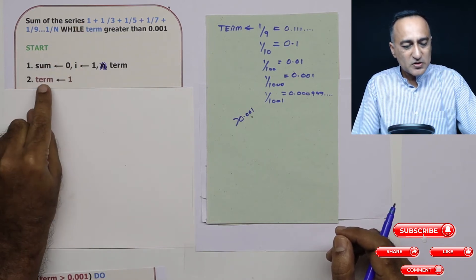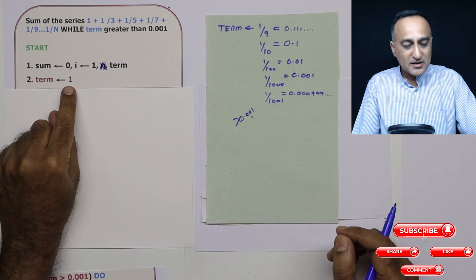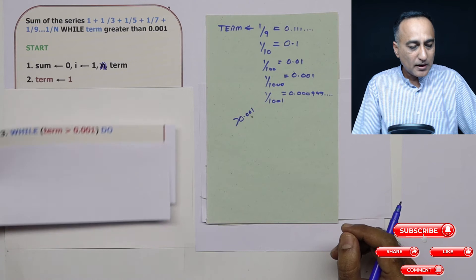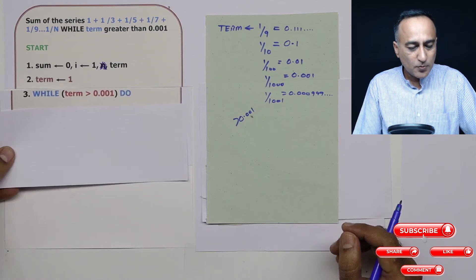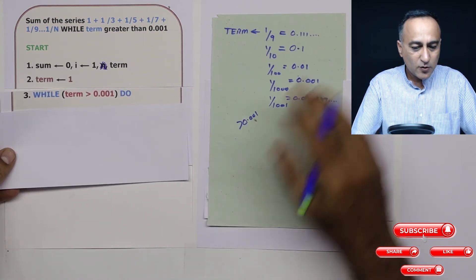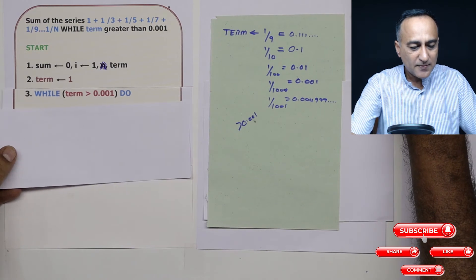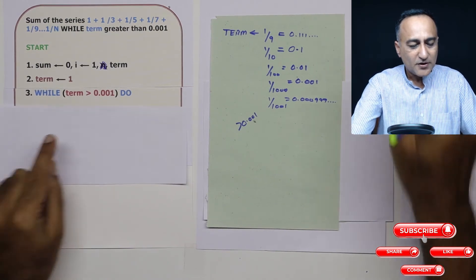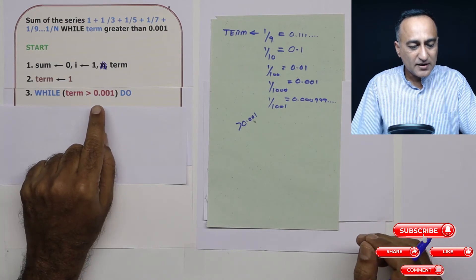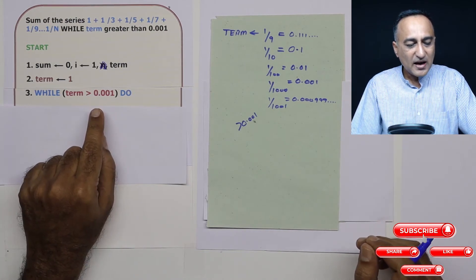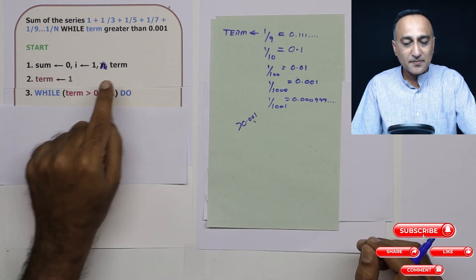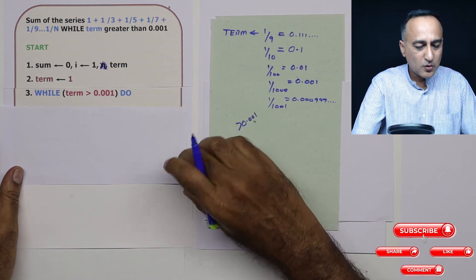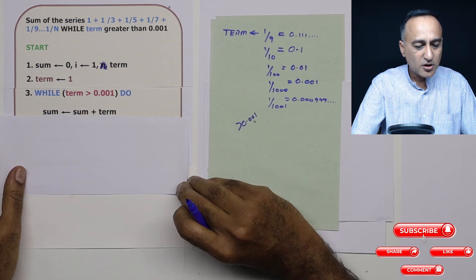So initially, 1 upon 1 is 1, so I have made the value of term as 1. Then how long should I continue this particular loop? I should continue this particular loop as long as the value of term happens to be greater than 0.001. So if it is greater than 0.001, then next step what I need to do is I need to say sum is sum plus term. So initially sum is 0, 0 plus 1 is sum is going to be 1.